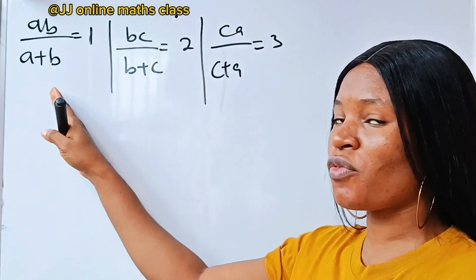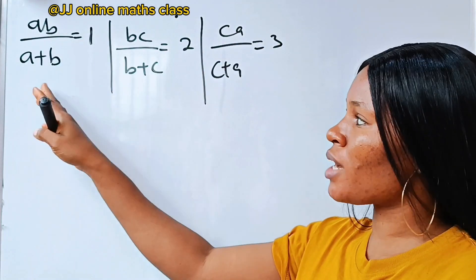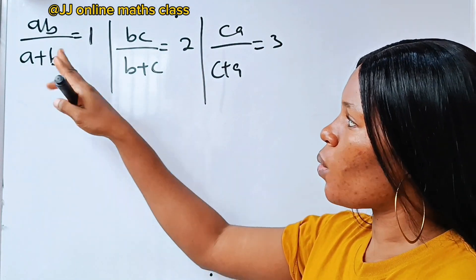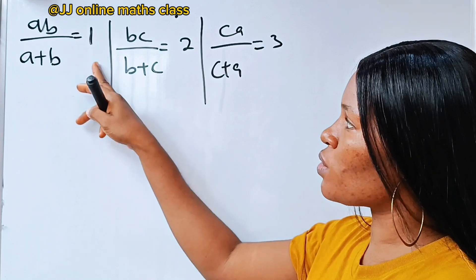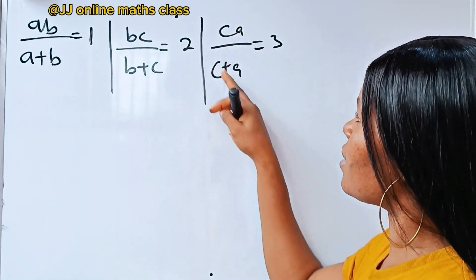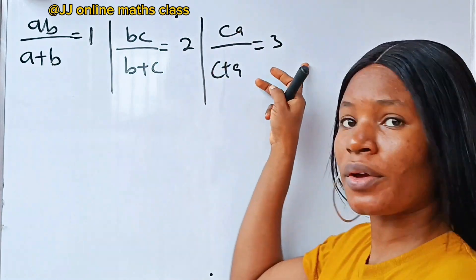Let me show you how to solve this type of question. We are asked to solve for a, b, and c when this is equal to 1, this is equal to 2, and this is equal to 3.